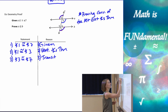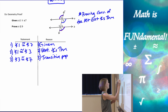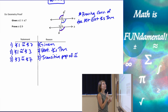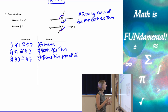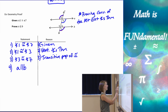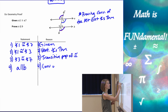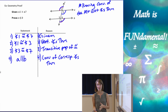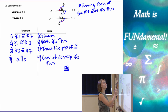Using the transitive property of congruence, I'm now at angles three and seven. Because those are corresponding angles and they're congruent, I can jump straight to the lines being parallel using the converse of the corresponding angles theorem — it states that if corresponding angles three and seven are congruent, then the lines are parallel. And we just proved that the converse of the alternate exterior angles theorem works.